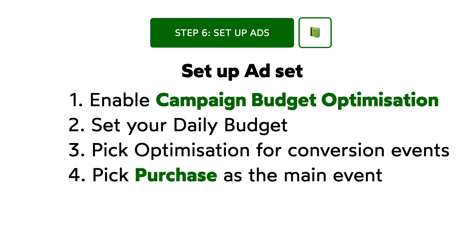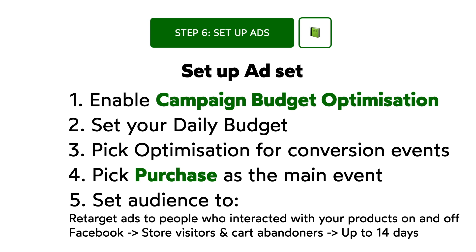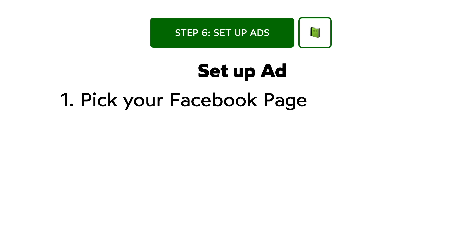Remember how we prioritized the pixel events? That's why we did it. Under Audiences, pick retarget ads to people who interacted with your products on and off Facebook, then choose one of the audiences. We suggest engaging both store visitors and cart abandoners. Under Duration, set a period between 7 and 14 days — shorter campaigns may not have enough impact, while longer durations may annoy your customers. Keep placements automated for now; you'll want to run your ads for a while before deciding which platforms and placements to focus on. Under Identity, pick your Facebook page and Instagram account if your business has one.